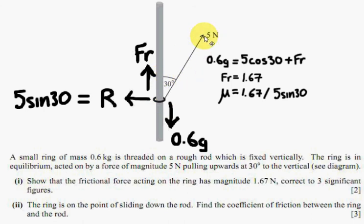So 5 cos, sorry, 5 sin 30 is the amount of force going that way, which is the reaction force.